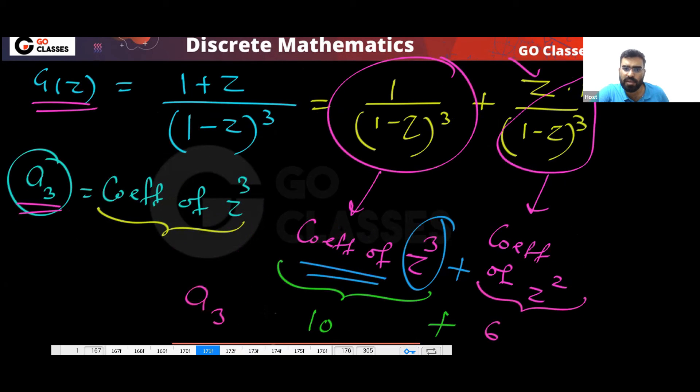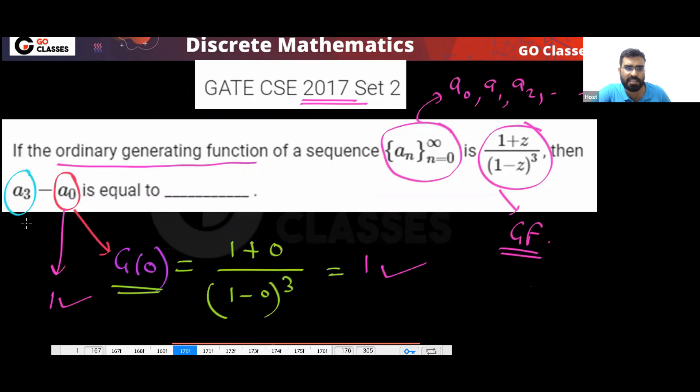So a₃ will be 10 plus 6, which is 16. And the final answer — a₃ minus a₀ — will be 16 minus 1, which equals 15.